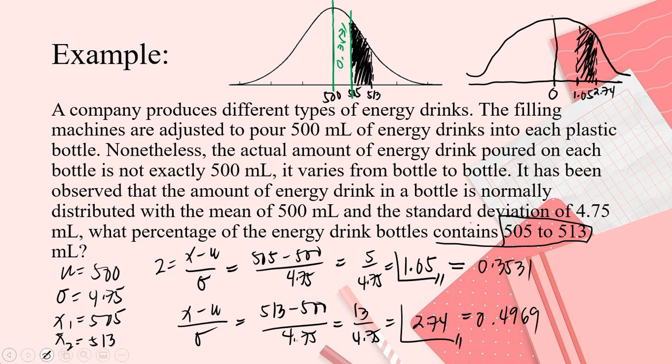And then, another color blue. From 513 to the mean, how much? This, this part, how much? 0.4969. But, what does it say? What you're only getting is, who? Only this is what you're looking for. Only that part. So, what will you do now? What will you do?